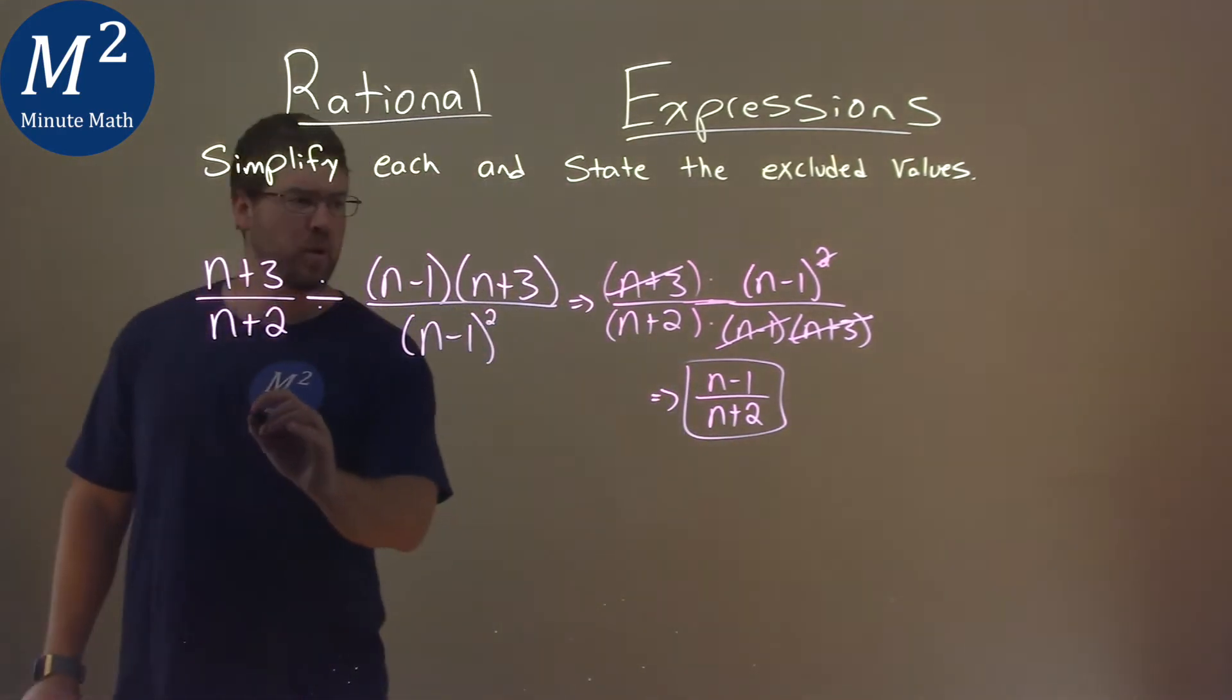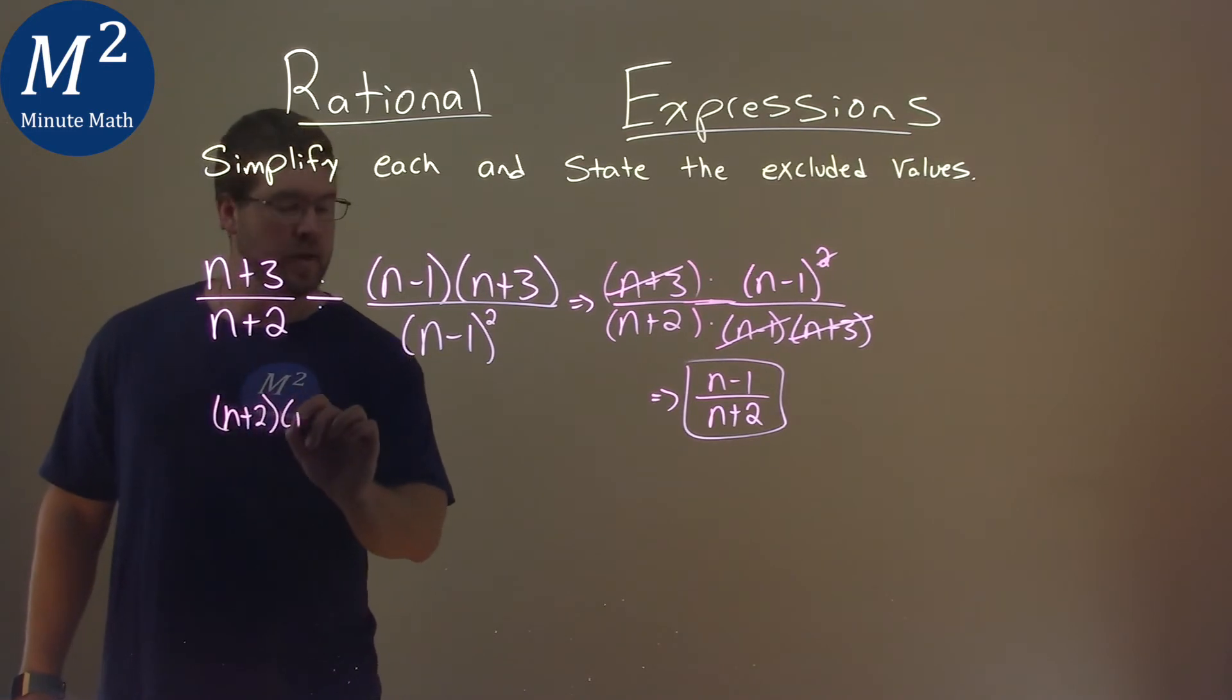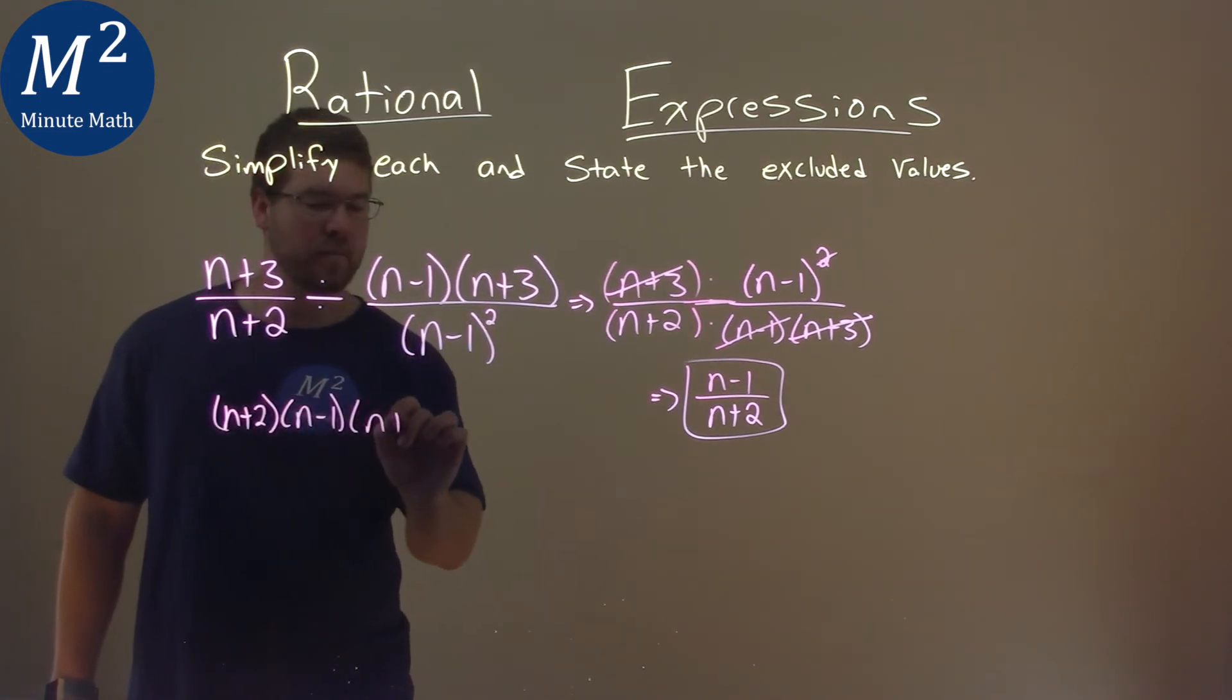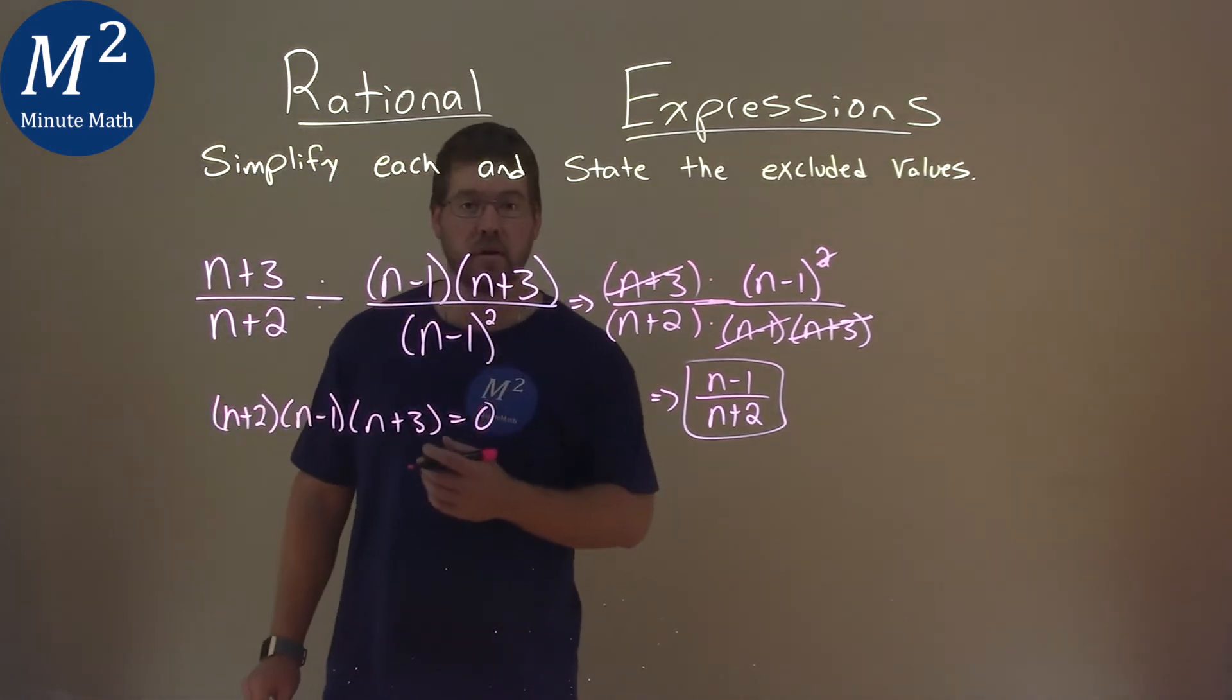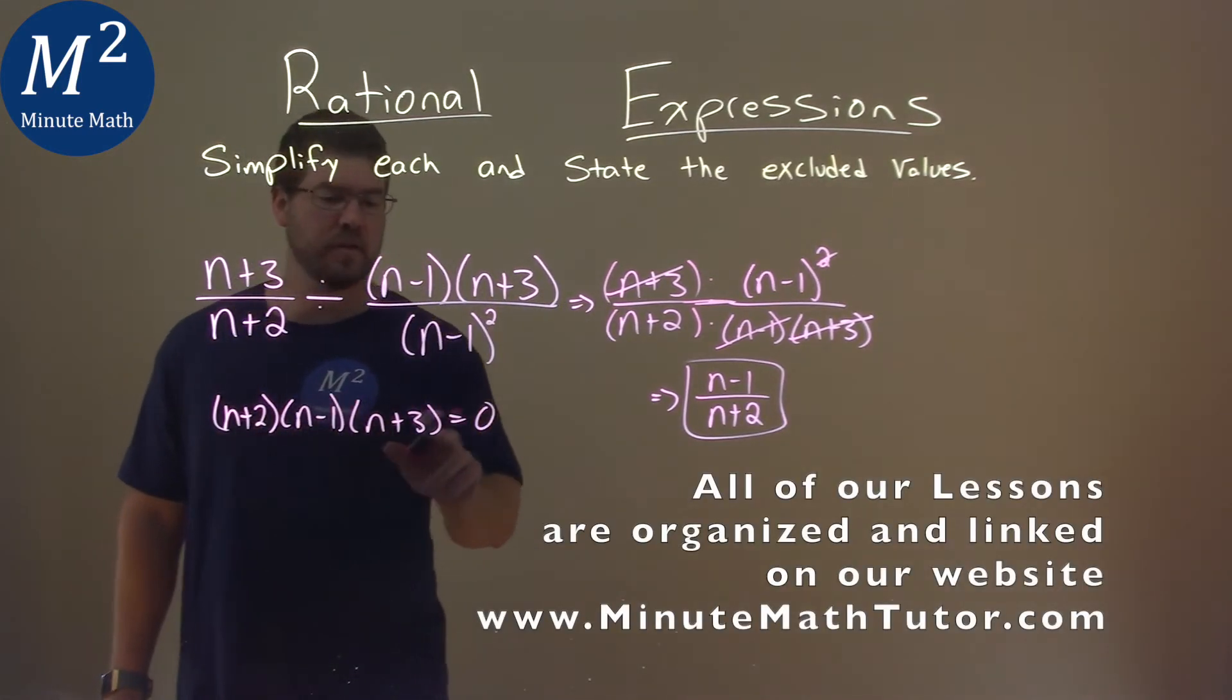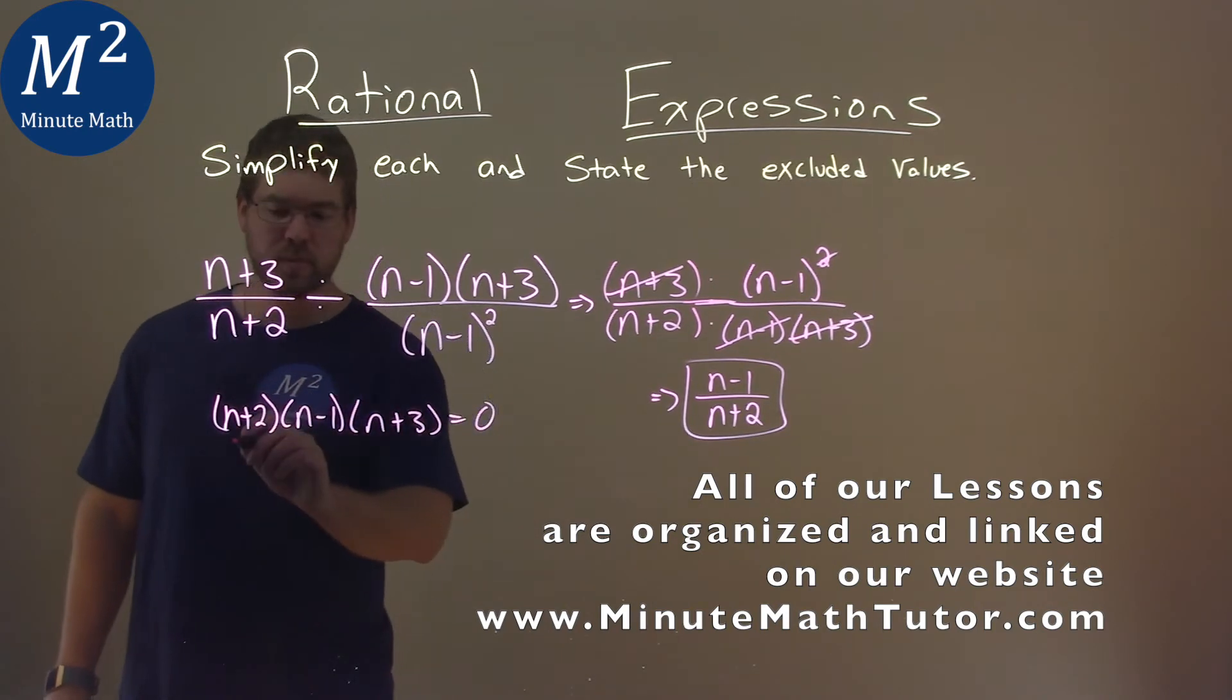So we're going to take that whole denominator, n plus 2, n minus 1, and an n plus 3, and we're going to set it equal to 0 to find when does this occur. But our rules state that each part individually can be set equal to 0 when solving.